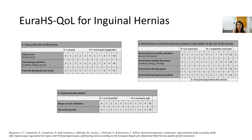Inguinal hernia repair is one of the most commonly performed surgeries, and its outcomes can be evaluated using the URIHS quality of life instrument. This is a validated instrument that looks at three domains of patient quality of life, including pain, restriction of activities, and esthetical discomfort.